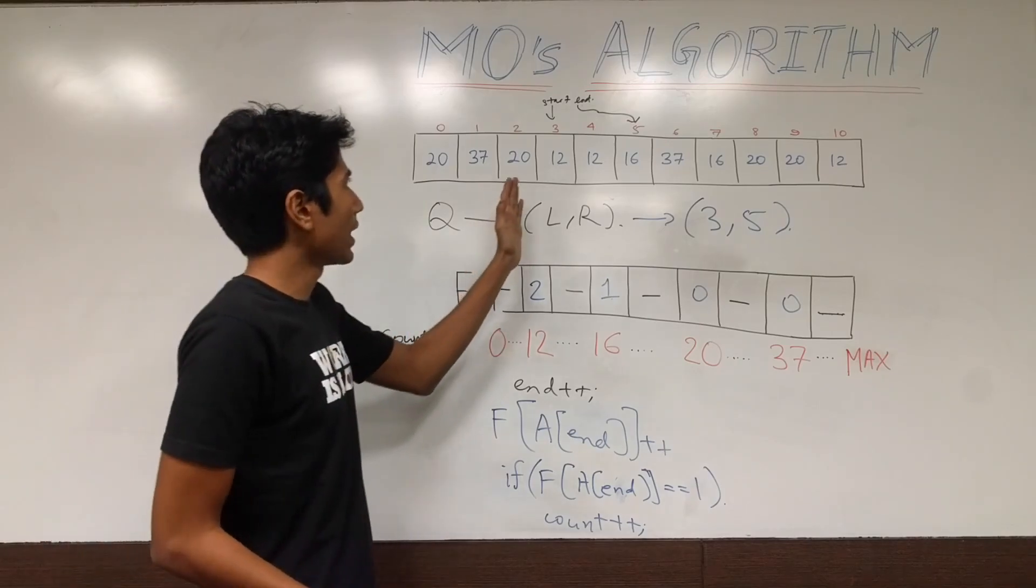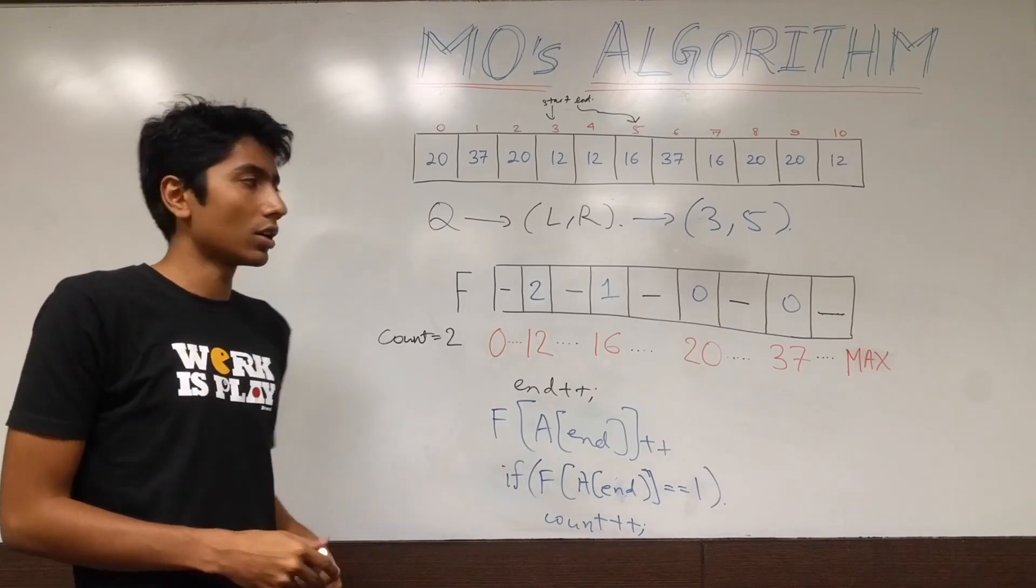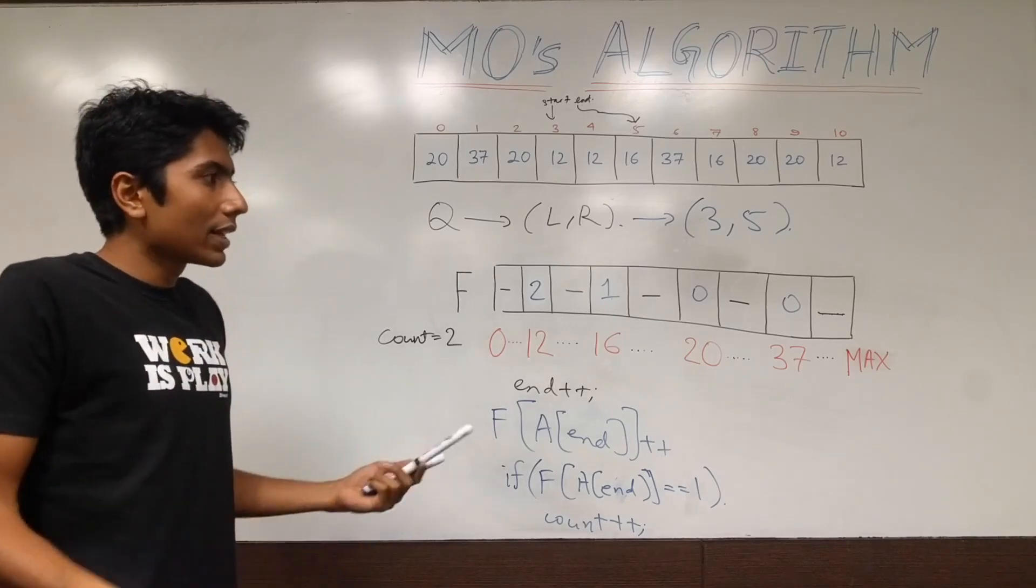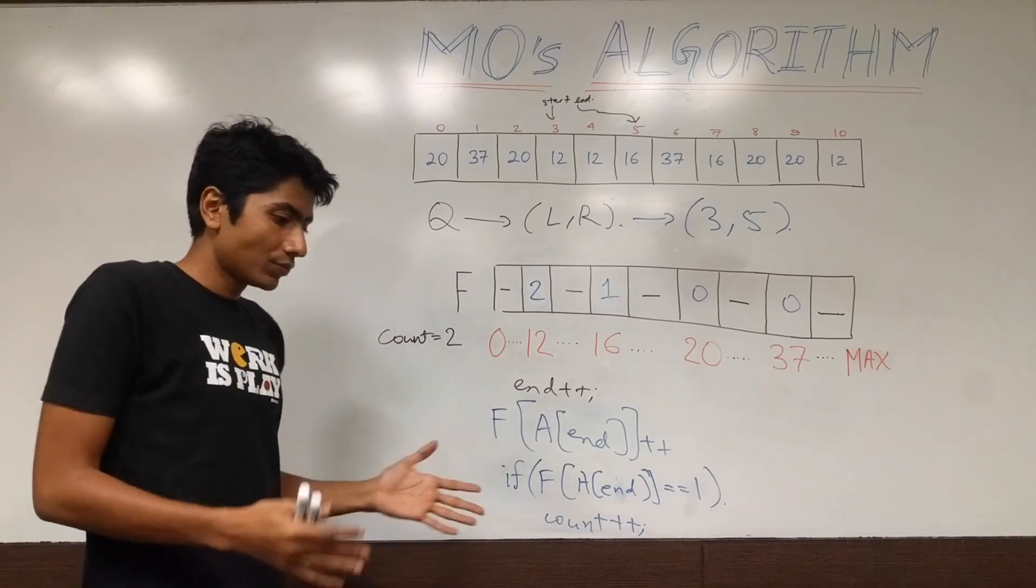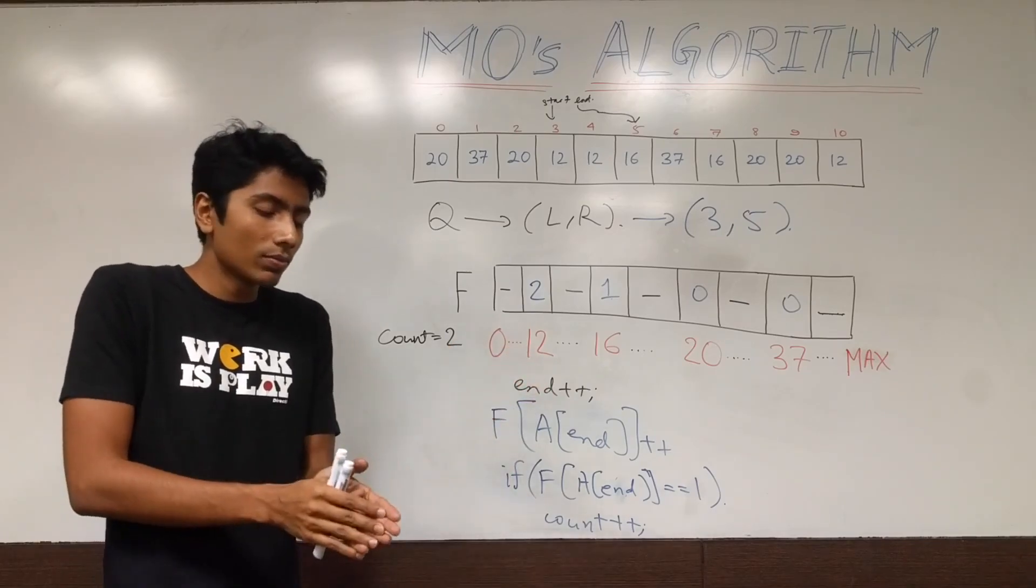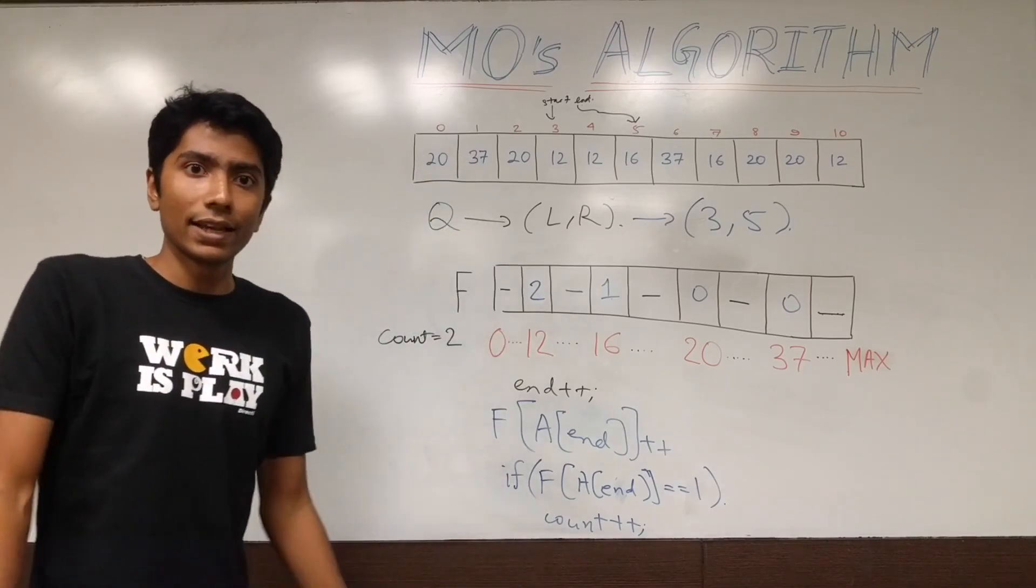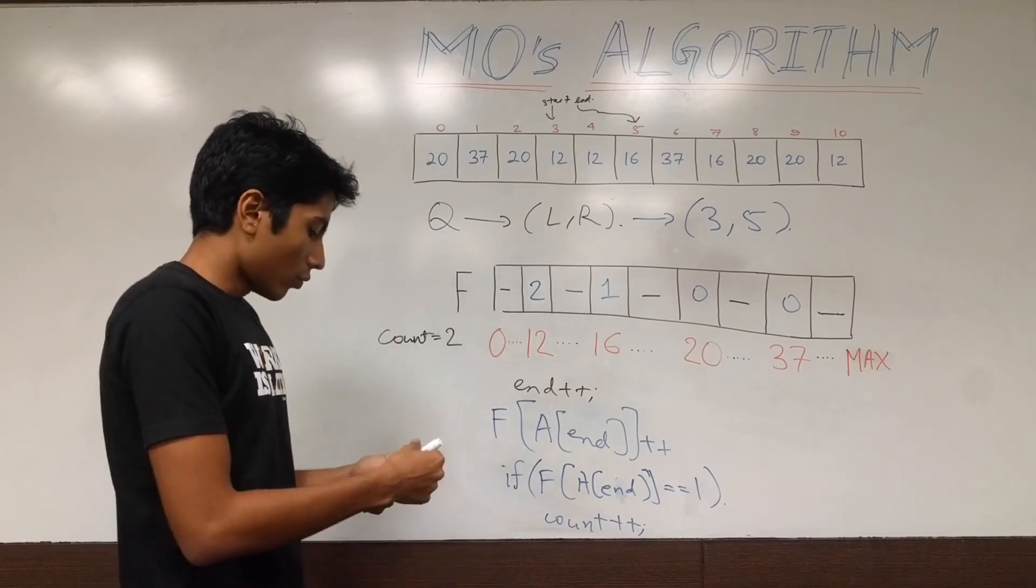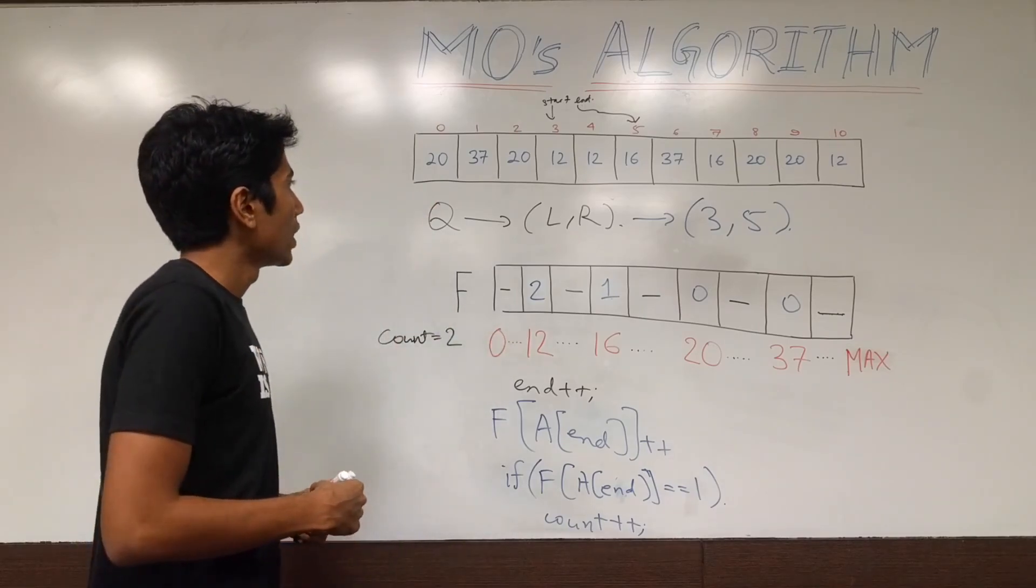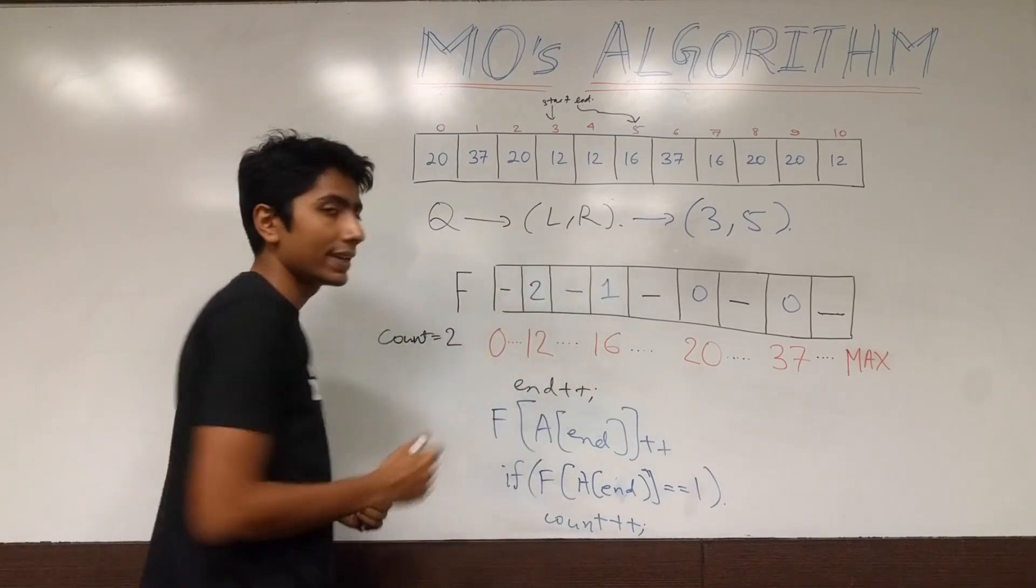Now, of course, you saw that this is still an O(n) operation for this particular query. So even now we haven't improved on the complexity at all. But what we are going to do is, we are going to arrange our queries such that the complexity will reduce by itself. What we need to do is, sort our queries by the left index and the right index.